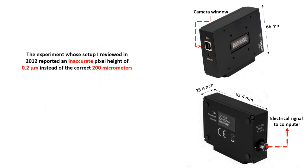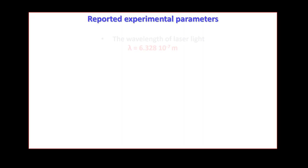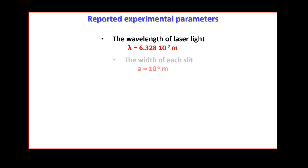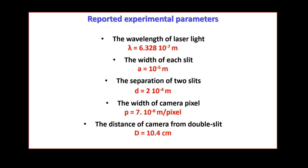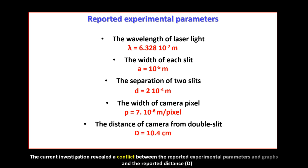The experiment reviewed in 2012 reported an inaccurate pixel height of 0.2 instead of the correct 200 micrometers. Reported experimental parameters were: the wavelength of laser light, the width of each slit, the separation of the two slits, the width of the camera pixel, and the distance of the camera from the double slit. The current investigation revealed a conflict between the reported experimental parameters and graphs and the reported distance d.